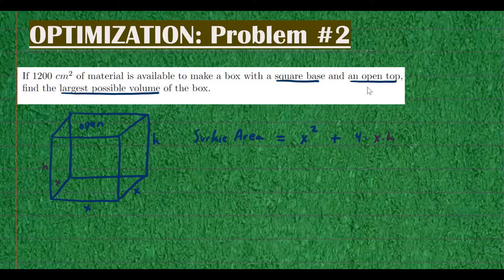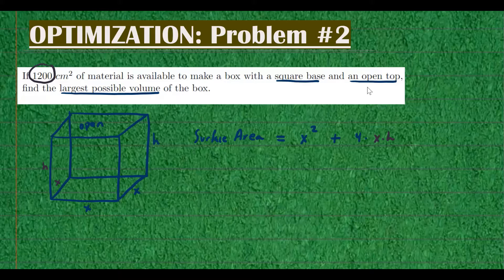So that's the surface area of this figure. And we know that there is 1,200 square centimeters. So surface area is 1,200 equals x squared plus 4xh.